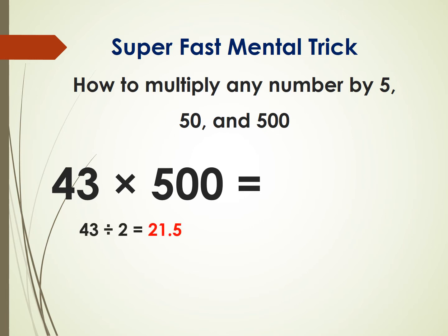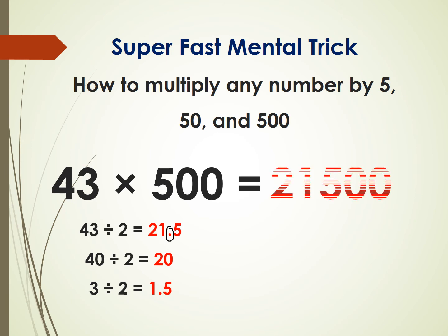Next example: 43 times 500. Divide 43 by 2 — you get 21.5. Divide 40 by 2, you get 20, then 3 divided by 2 is 1.5. Add them up, you get 21.5. Just ignore the decimal point and then put two zeros after this number, so the answer is 21,500.